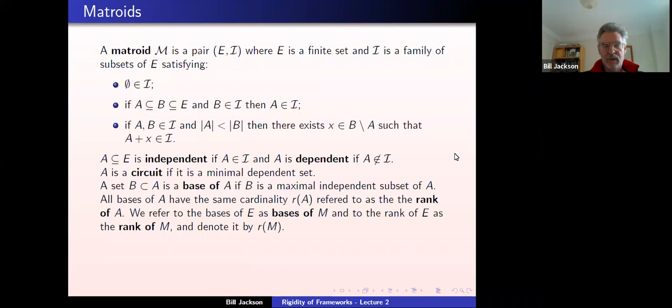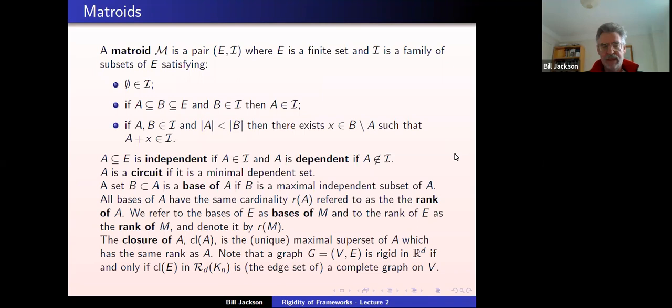Here's a new definition I didn't give yesterday. Given a subset of the ground set, the closure of this subset is the unique maximal superset which has the same rank. Algorithmically, we can construct the closure by going through the elements which do not belong to it one by one, adding them to the set if they do not increase the rank, and throwing them away if they don't increase the rank. This greedy algorithm will produce a unique maximum by the third axiom of independence.